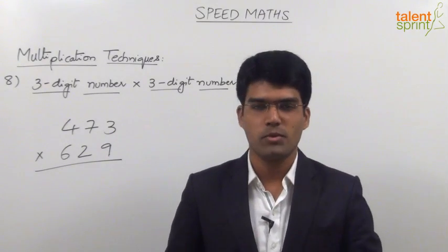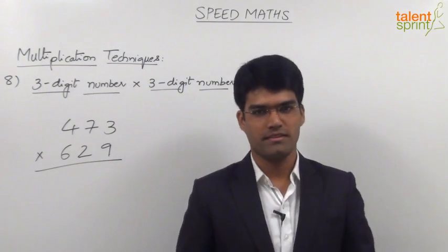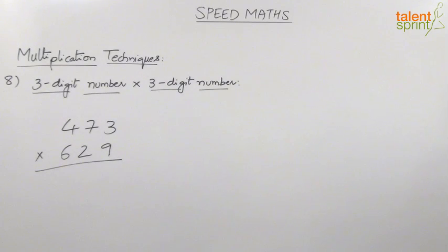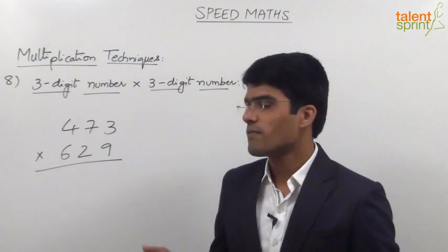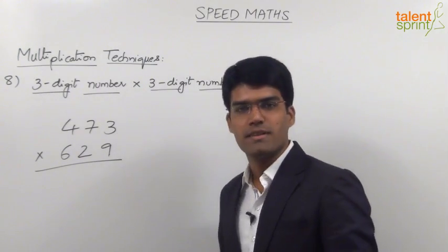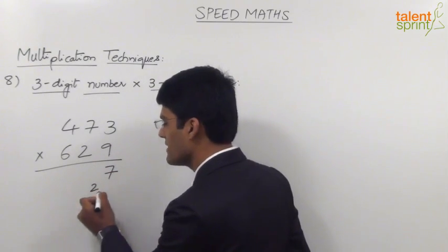After learning the five-step procedure for three-digit multiplication, it's your turn to get the answer for this practice question — the clock has already started. Step one: multiplication of units places — 3 into 9 is 27, so 7 is in the answer and 2 gets carried forward.